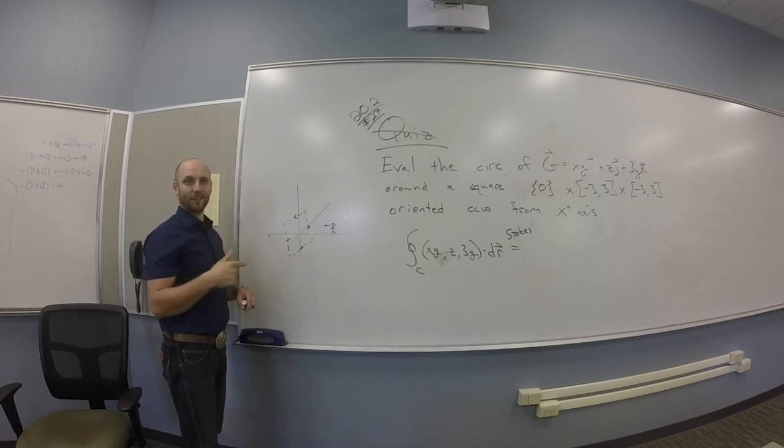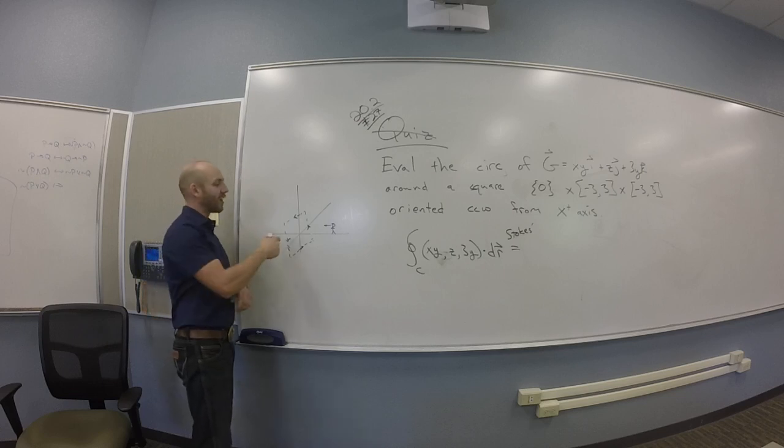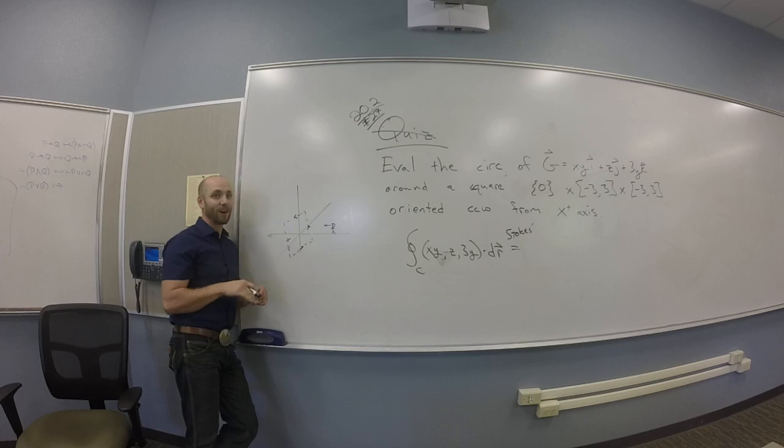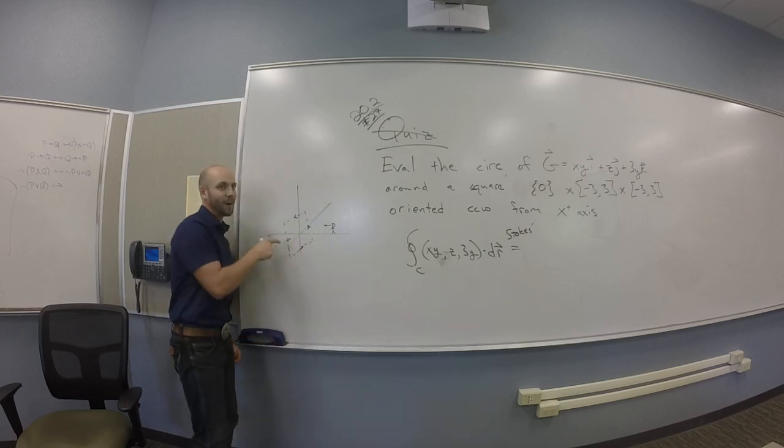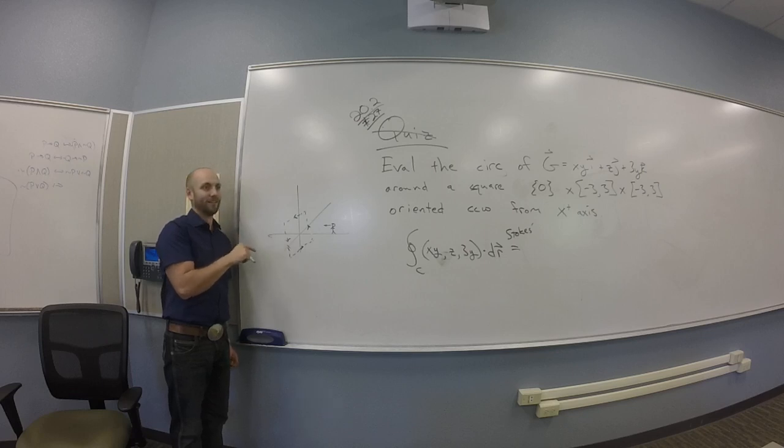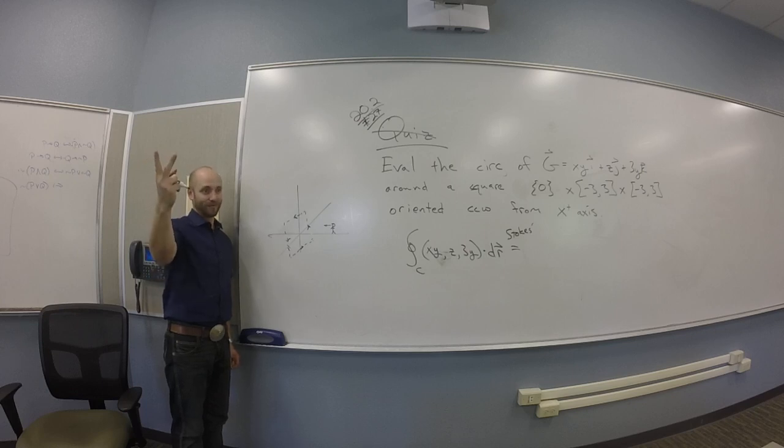So there's lots of surfaces that you can pick. The easy one is the square itself. You guys see that? So I'm pretty sure that squares being flat chunks of planes are piecewise smooth, right? Being one piece and being smooth probably makes them piecewise smooth.